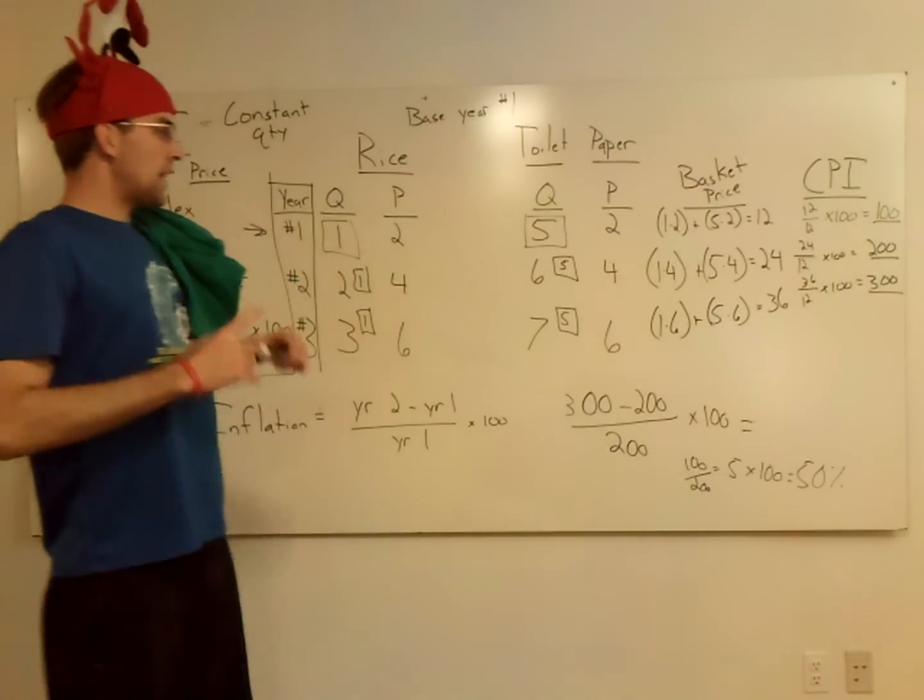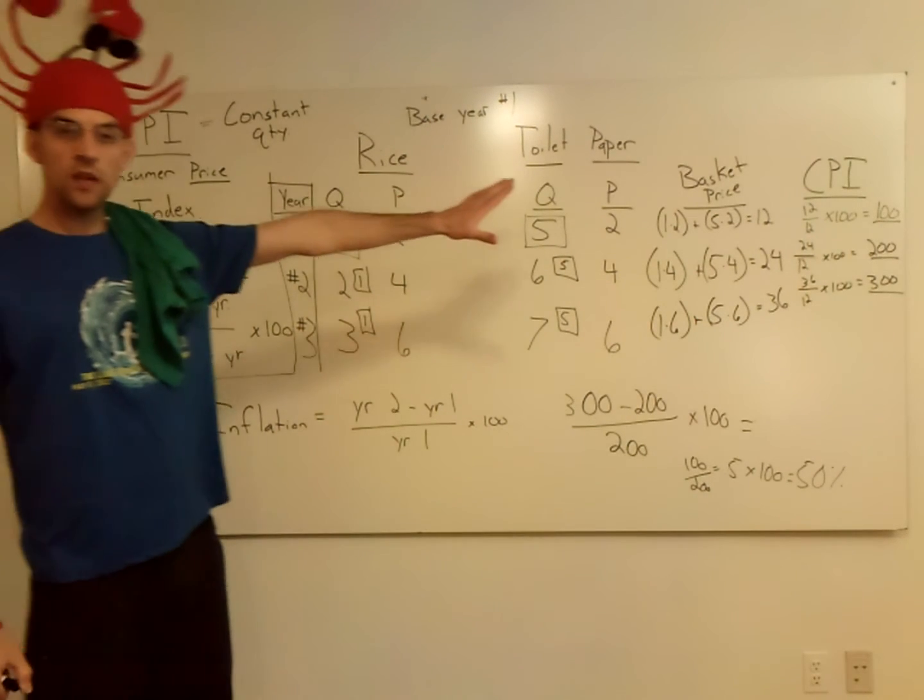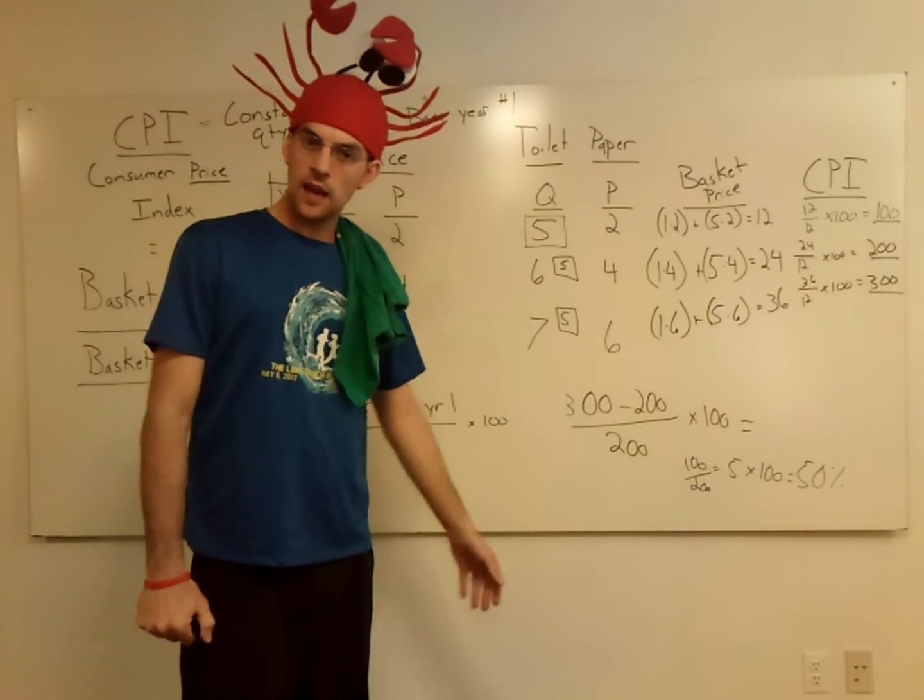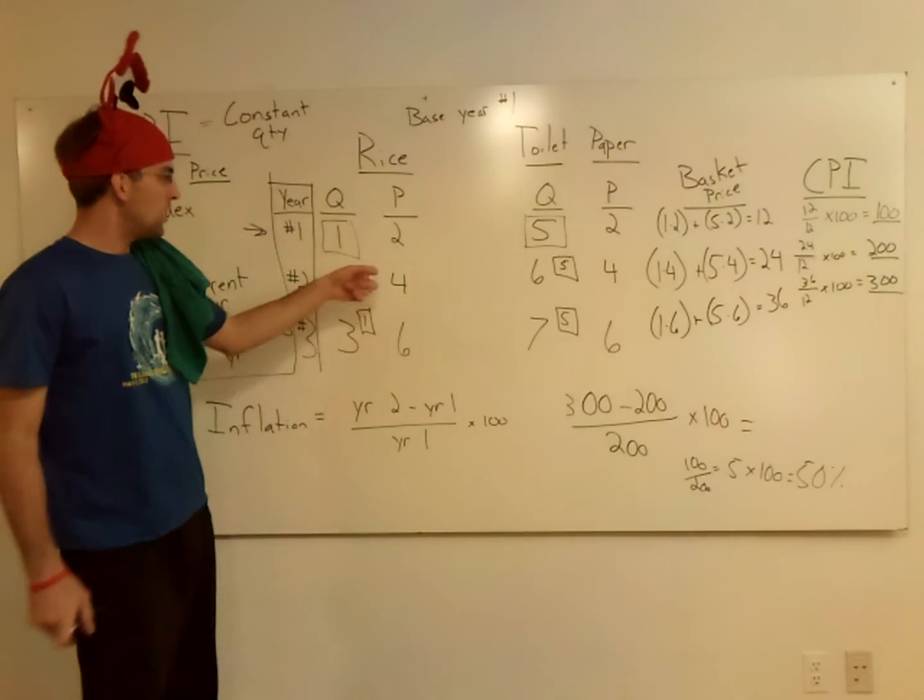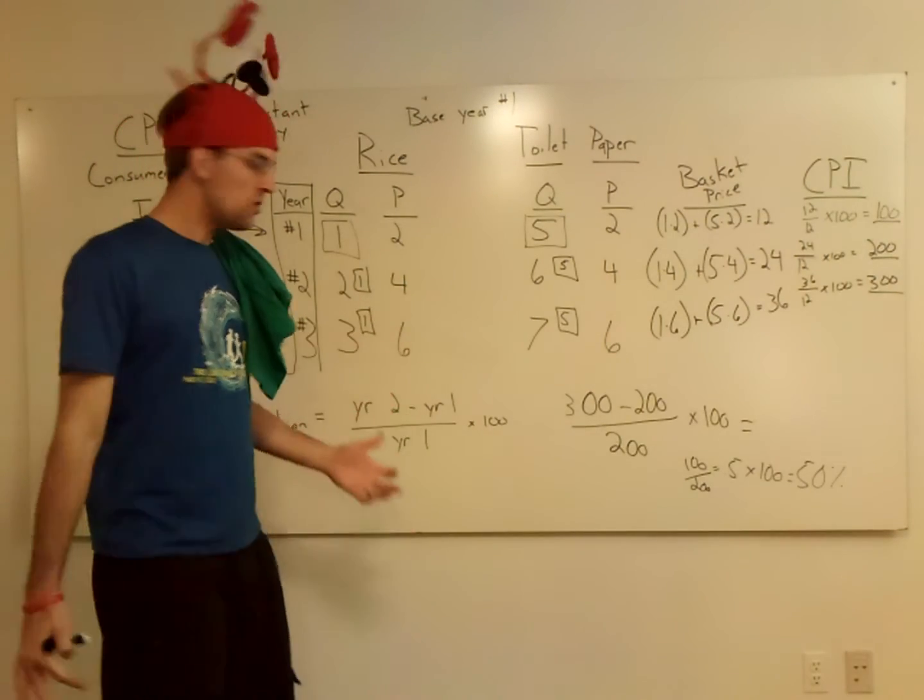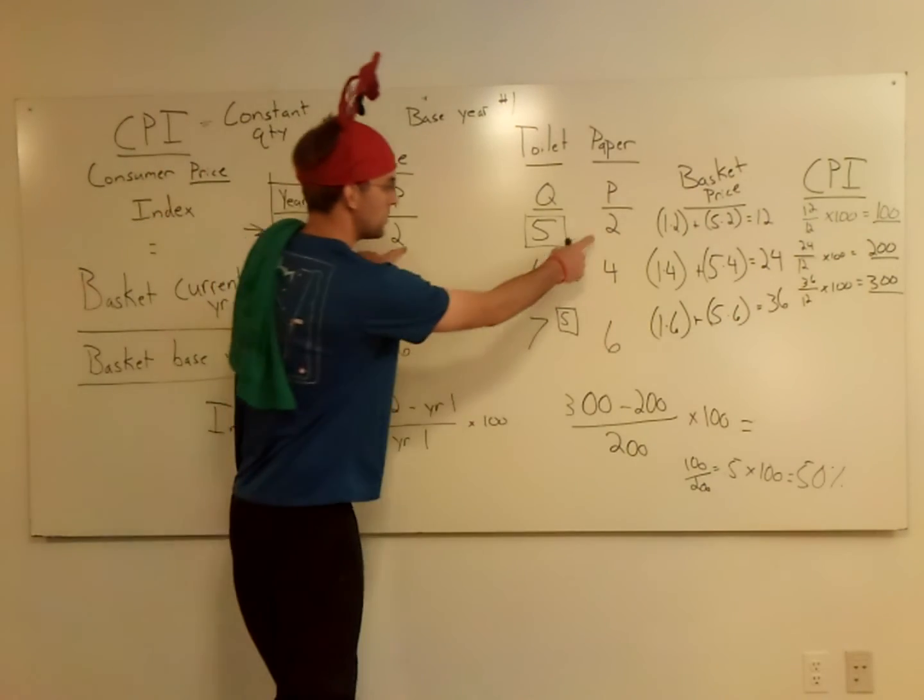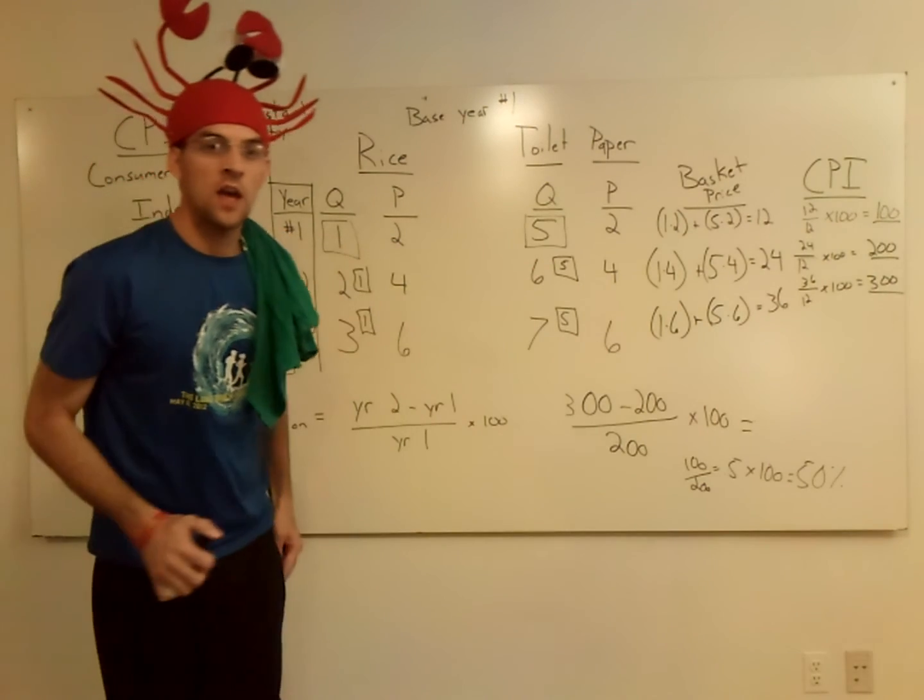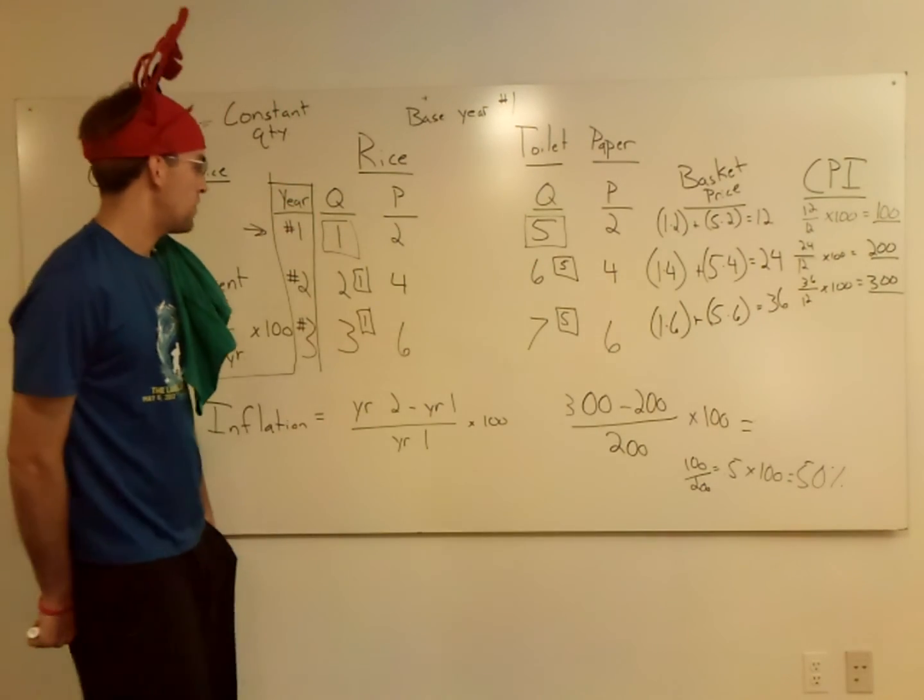You will notice a couple of things. You can do this with GDP deflator as well, because that is a type of price index. And you could actually do it just with the individual prices for rice. You could find out the inflation for just rice alone by doing the same thing. And if you notice, my price is 2, 4, 6. They go up the same. They would work exactly the same way, and you would get the same inflation as if you used 100, 200, and 300.